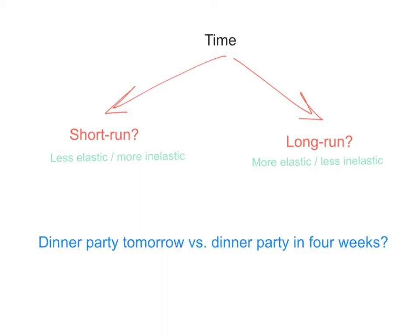This brings us to our last determinant of price elasticity of demand: time. Consumers take time to adjust their spending habits. When there is a rise in price for a product we buy regularly, we don't stop buying it immediately — consumers and markets take time to respond. So generally, in the short run, demand is quite price inelastic, because consumers don't really have that much time to adjust.